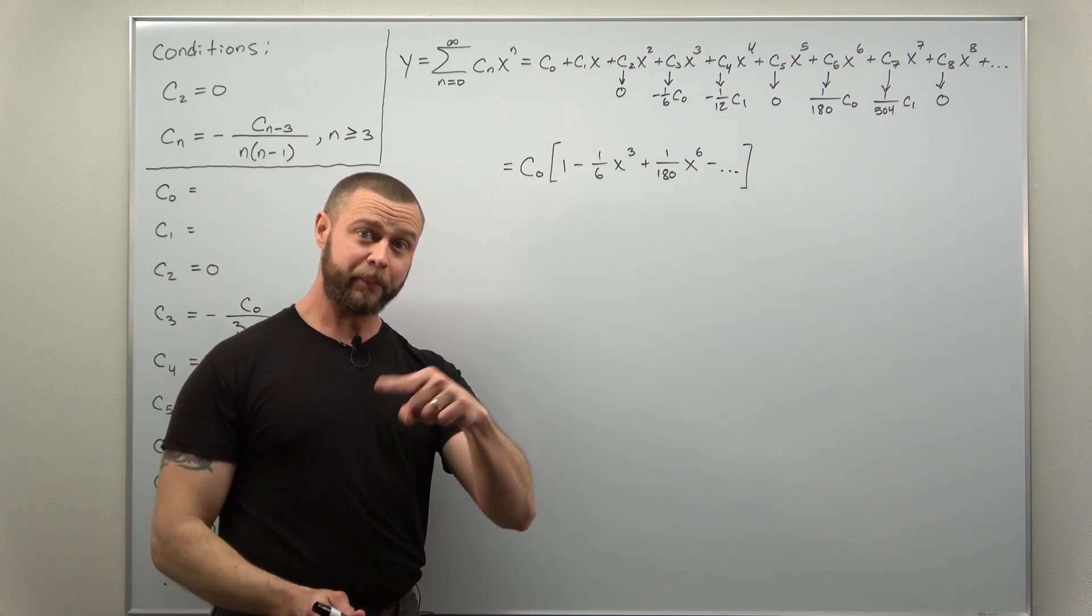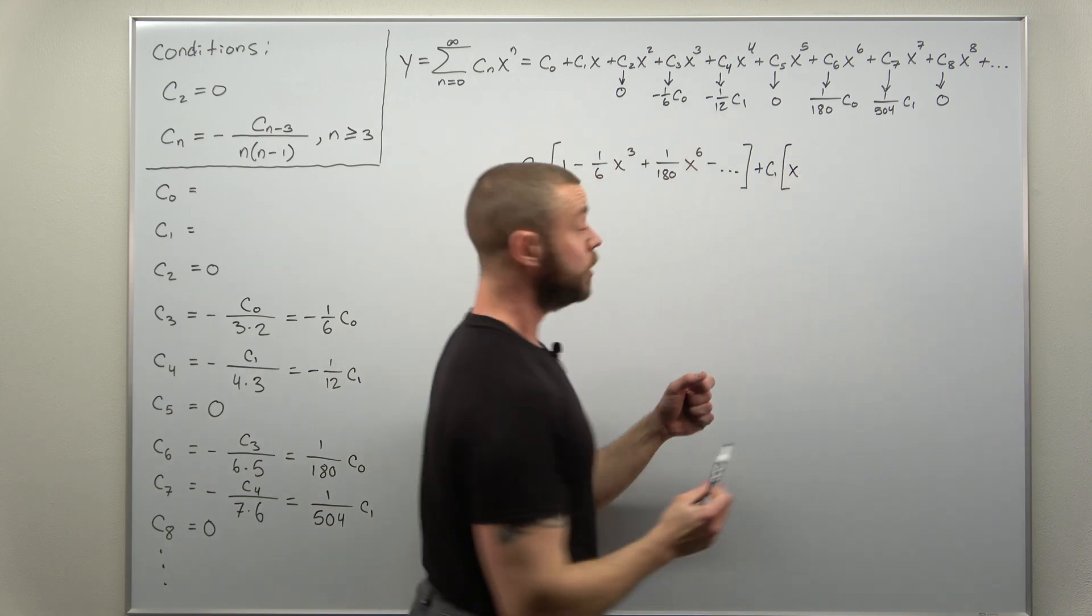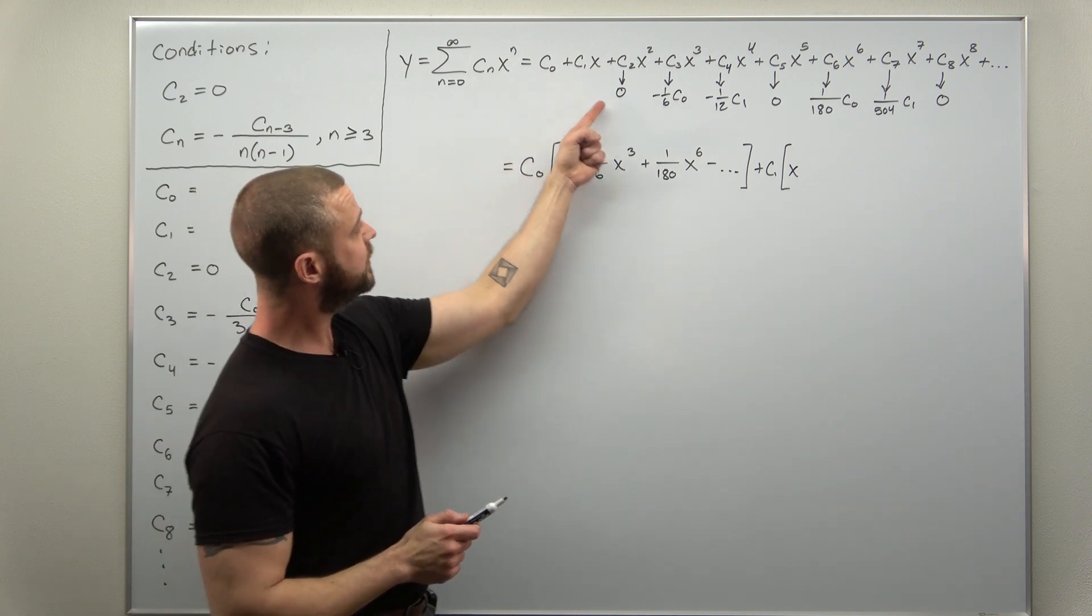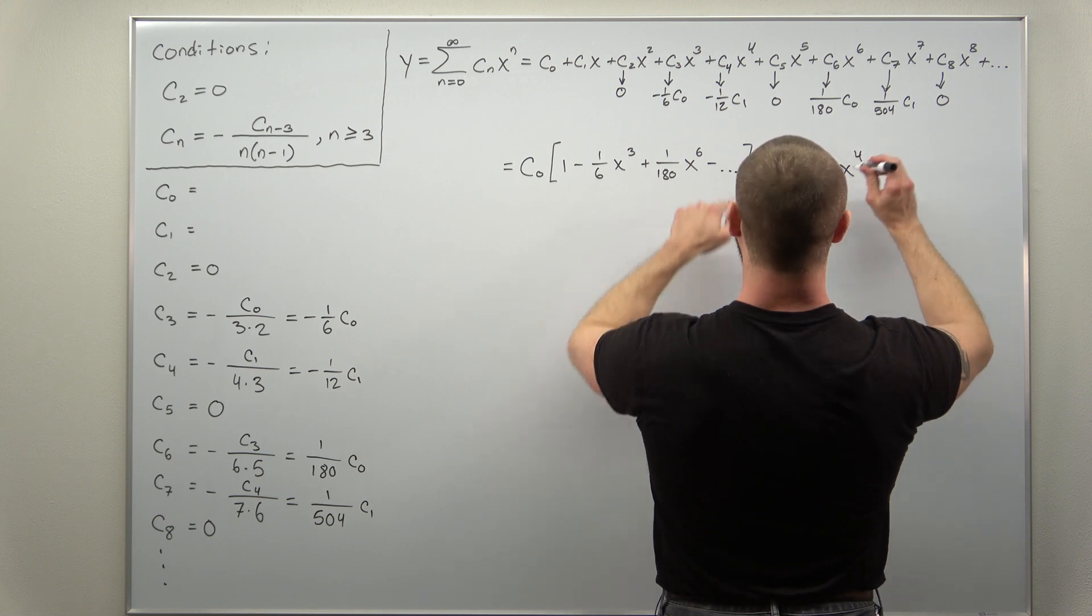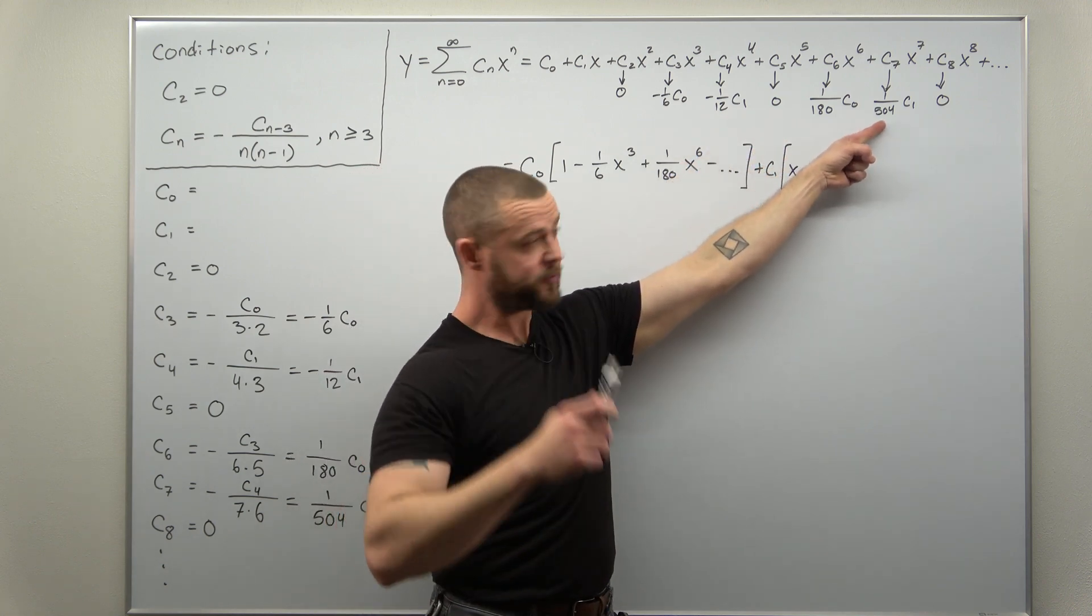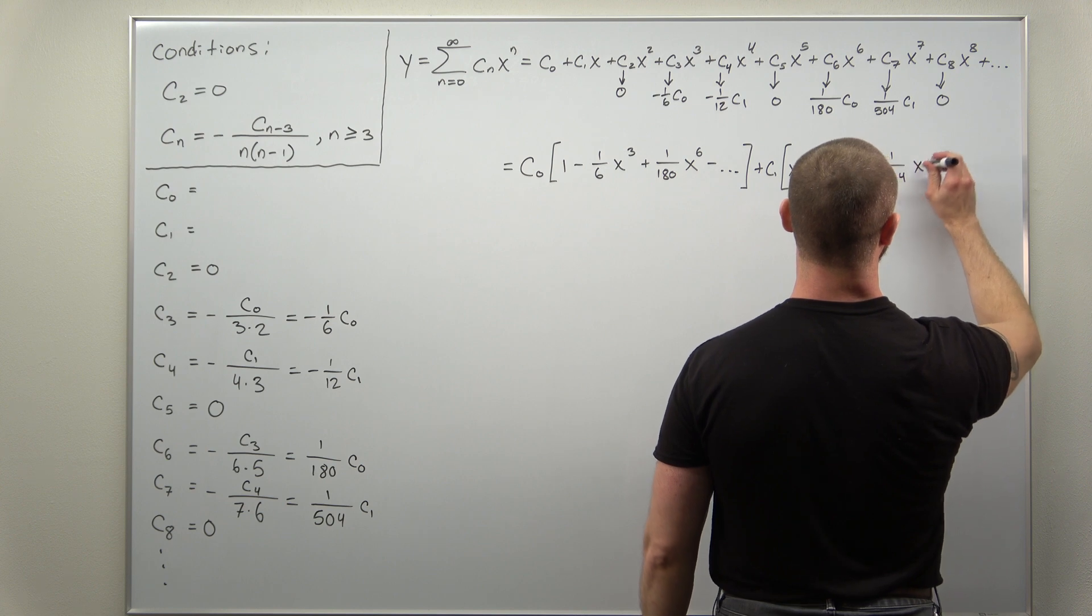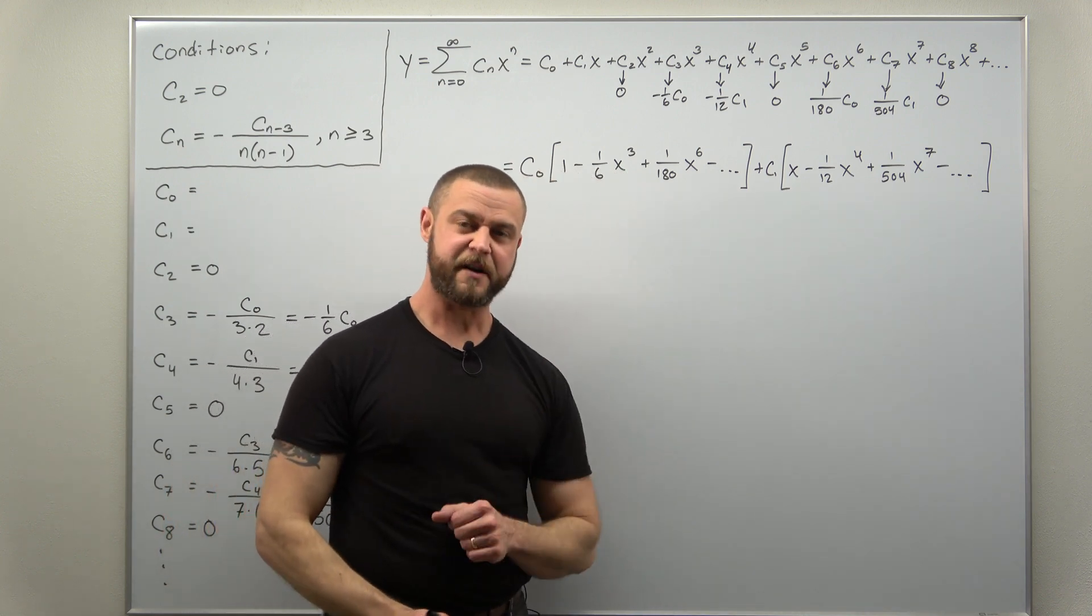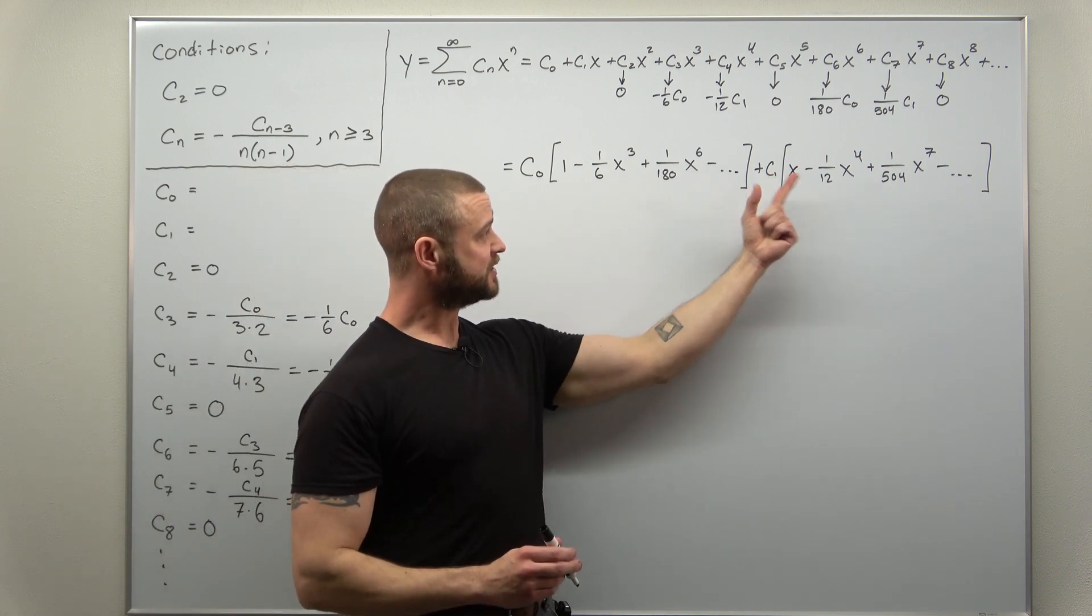All right. And the other non-zero terms are in terms of c sub 1. So let's factor out everything with a c sub 1 in it. We have our first one here, so we'll be left with x. Look for your next term with c sub 1 - that should be three terms or coefficients later. So c sub 1, we have that here on the x to the 4th term. So that's going to be minus 1 over 12 x to the 4th. And three coefficients or terms later, we should have another c sub 1 - 1, 2, 3 right there. Looks like that's going to be plus 1 over 504 x to the 7th. And again, we expect the next coefficient or term should have a negative, but we could figure that out if we wanted to.